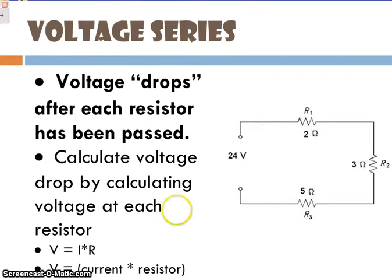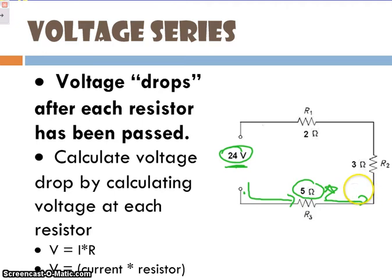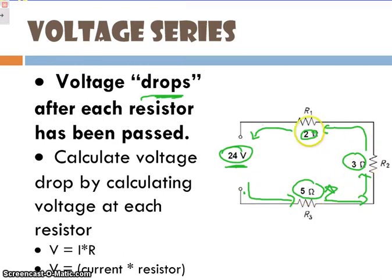The one thing that does change in a series circuit is voltage. Let's say we have 24 volts — your battery is the push provided to the electrons. We started off with 24 volts, and all of a sudden we hit this 5 ohm resistor. Resistors resist flow, so we had 24 volts here, but on the other side, my voltage is going to be lower. When I hit this 3 ohm resistor, it's going to drop again, and when I hit my 2 ohm resistor, it drops once again. Every time we hit a resistor, this is what we call a voltage drop. We'll cover how to mathematically find all of that tomorrow.